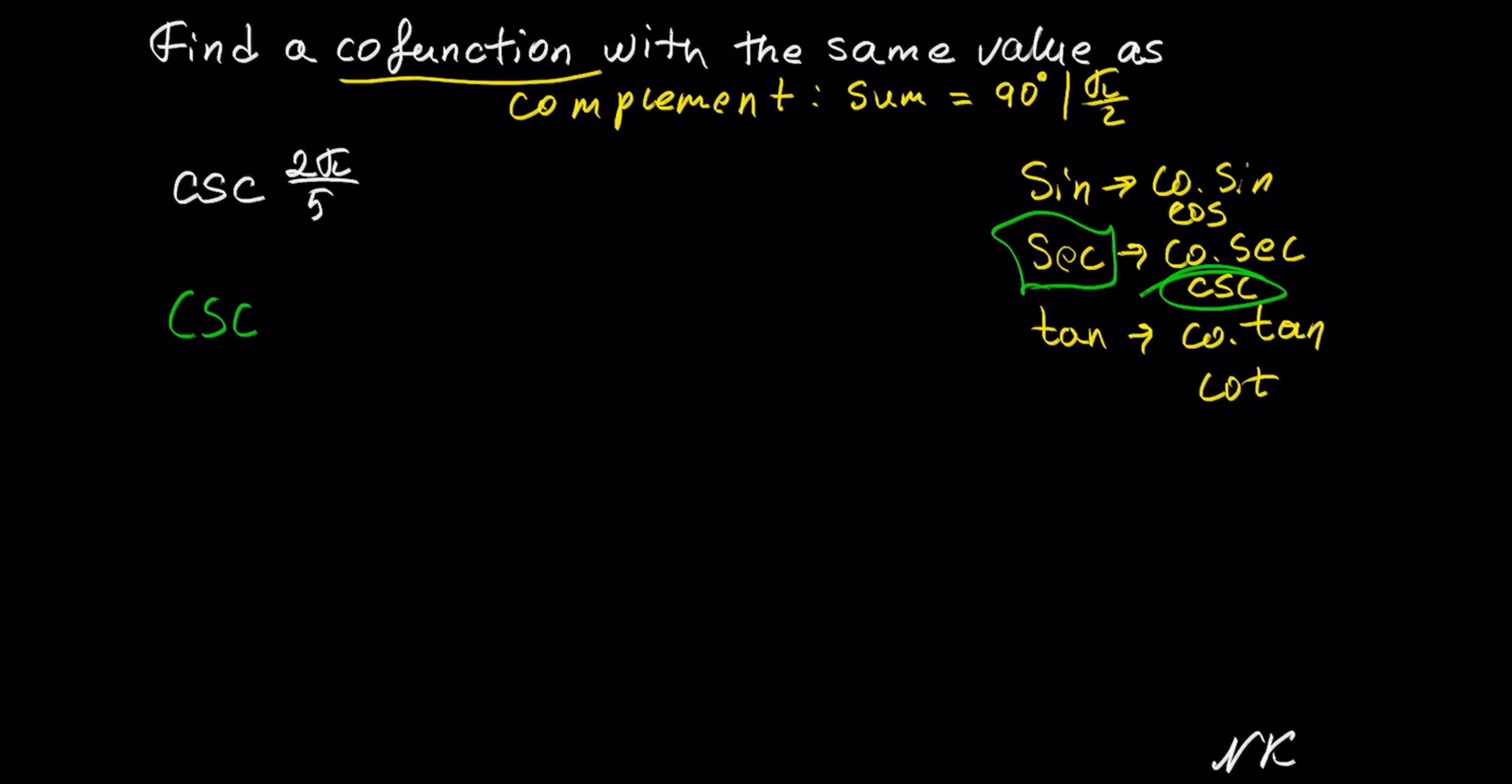Cosecant of theta is equal to secant of... and the sum of angles has to be equal to 90 degrees or π out of 2. Since the problem is given in radians, we are going to use π out of 2.